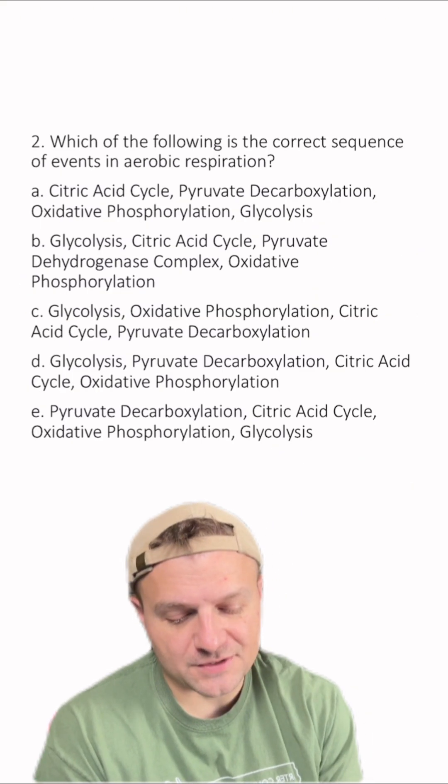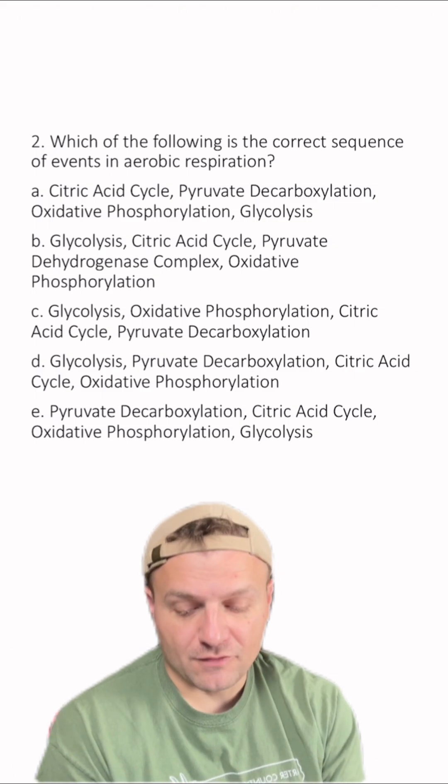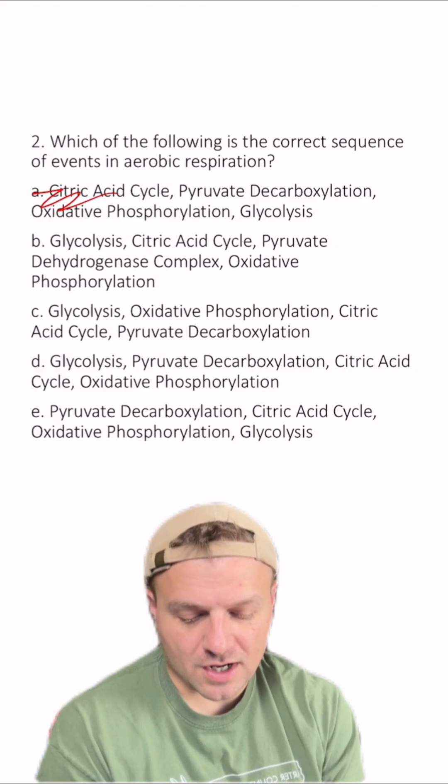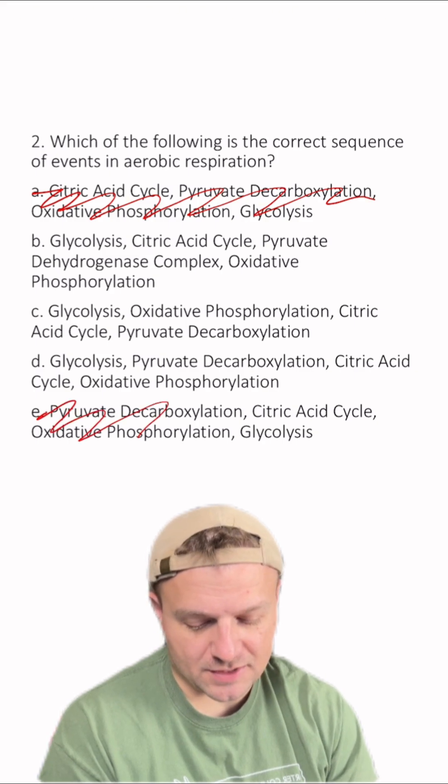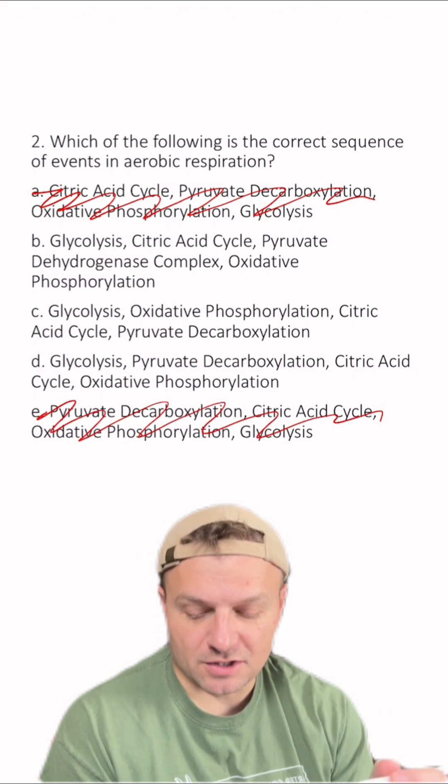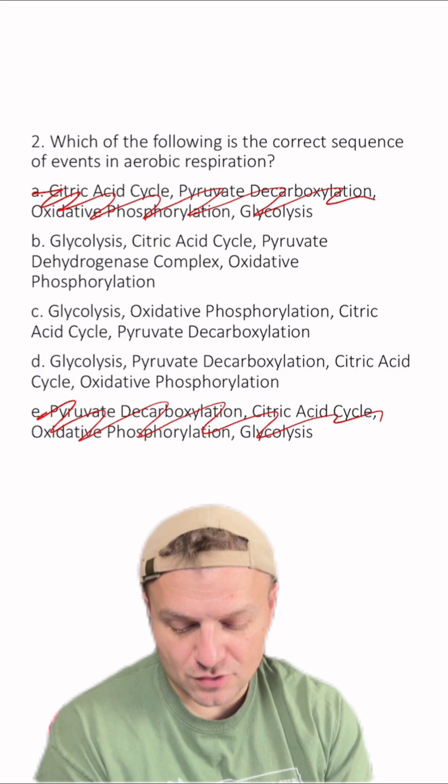Number two, which of the following is the correct sequence of events in aerobic respiration? If we look down our list, we can already scratch off A and E because they don't start with glycolysis. Cellular respiration always starts with glycolysis, so those two cannot be right.